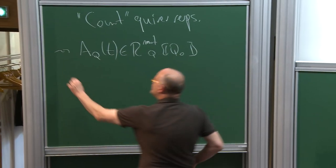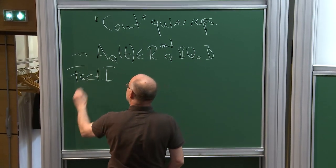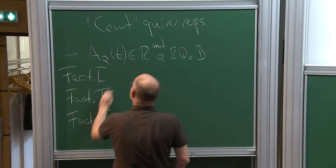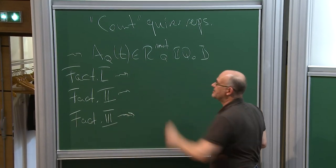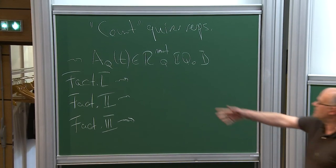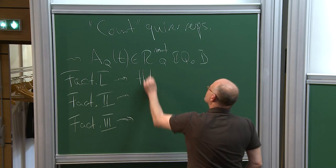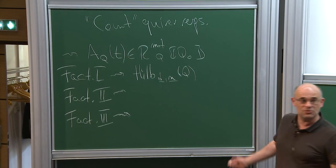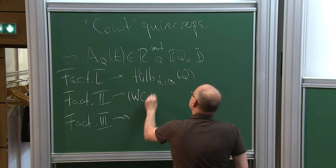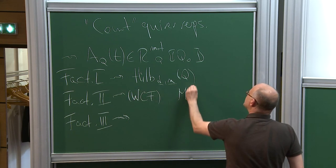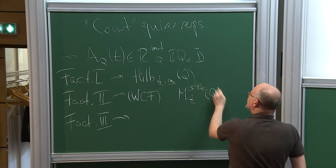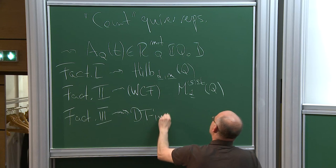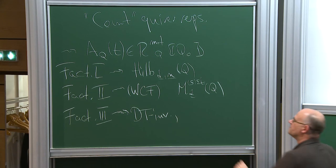We have seen three different ways of factoring: factorization one, factorization two, and factorization three — three different ways of factoring A(Q) in a purely formal sense. Factorization one was a logarithmic q-derivative, leading to a motivic generating function of Hilbert schemes associated to the quiver. Factorization two was the wall-crossing formula, leading us to moduli spaces of semi-stable representations and their motives. And finally, factorization three brought us to DT invariants and to the intersection cohomology of these moduli spaces.